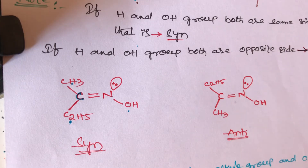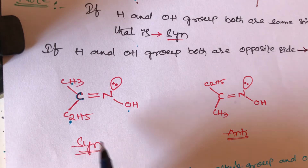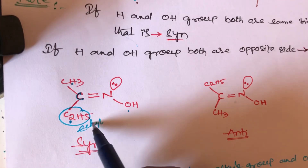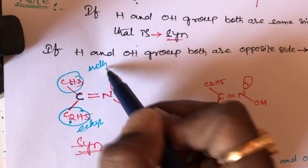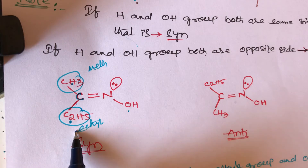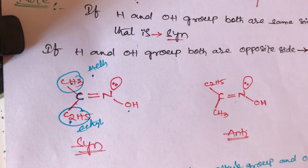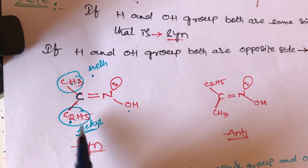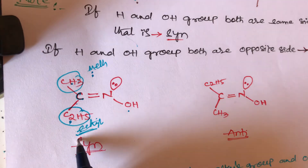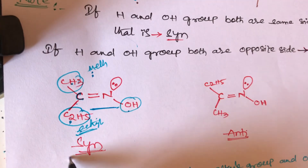For different alkyl groups, follow the alphabetical order. Alphabetically, the preferred alkyl group and the OH group on the same side = syn. Here the carbon has one ethyl group and one methyl group. Alphabetically, E comes before M, so ethyl has first priority. If ethyl group and OH group are both on the same side, that is called syn-oxime or cis.